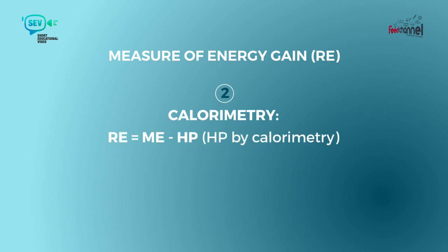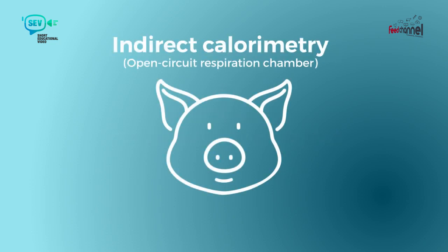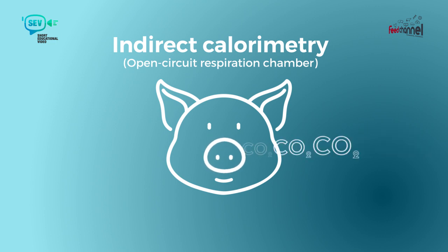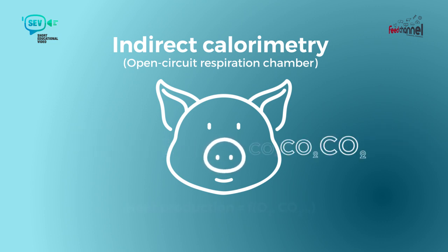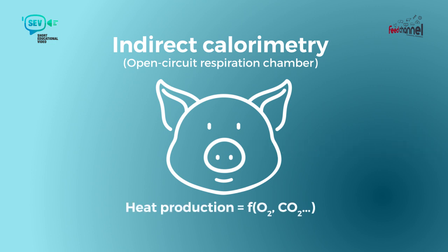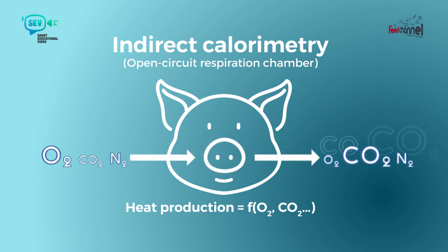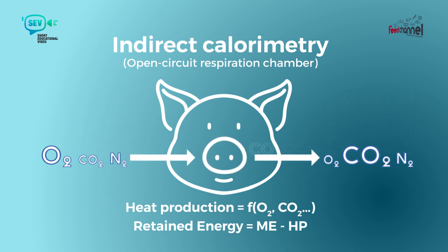Calorimetry methods consist in measuring or calculating heat production. These techniques are very much used now, and the most popular is indirect calorimetry, usually in open circuit respiration chambers. This consists in measuring the oxygen uptake of an animal and the carbon dioxide production, and heat production is calculated according to a formula taking into account both. This technique is widely used in most types of animals, including small size animals like poultry or fish, and from the heat production measured in the chamber we can calculate the amount of energy gain or retained energy.